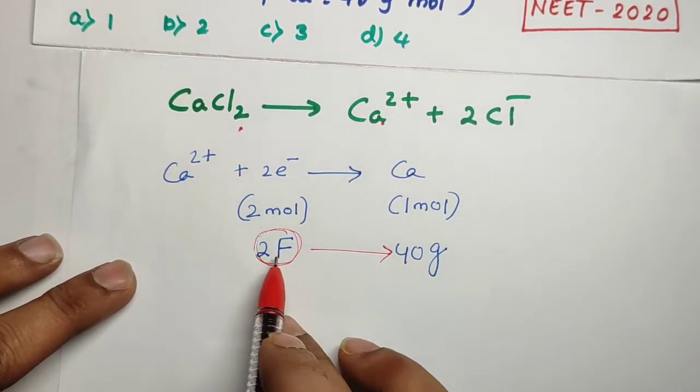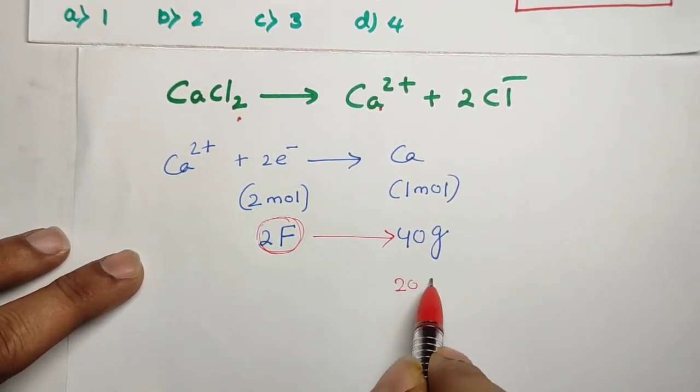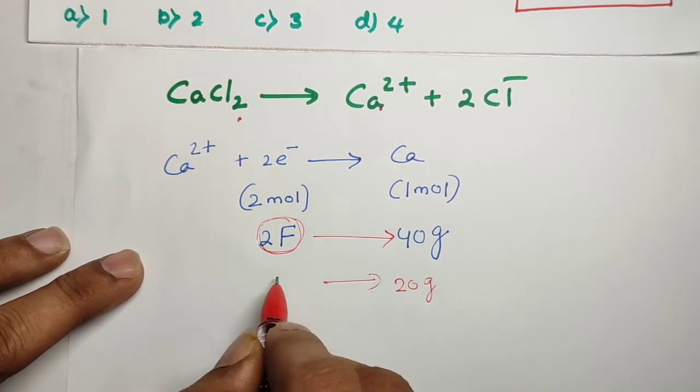So for 40 grams we need two Faraday. For 40 grams we need two Faraday. Then, for 20 grams we need how many Faradays?